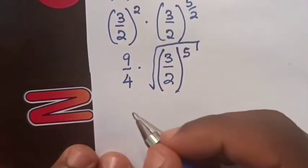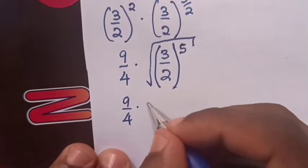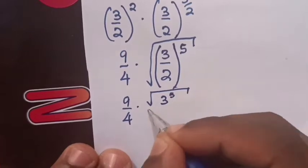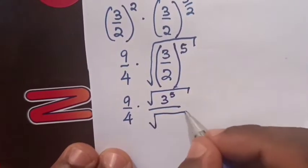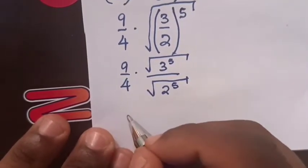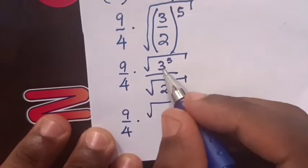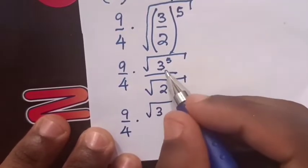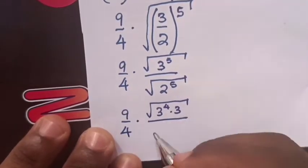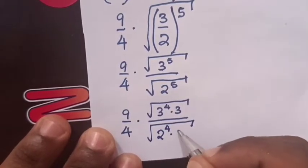Then our expression will be 9 over 4 times square root of 3 to the power 5 over square root of 2 to the power 5. So it will be 9 over 4 times square root of 3 to the power 5, which is the same as 3 to the power 4 times 3 over 3 to the power 6 over 4, over 2 to the power 4 times 2.